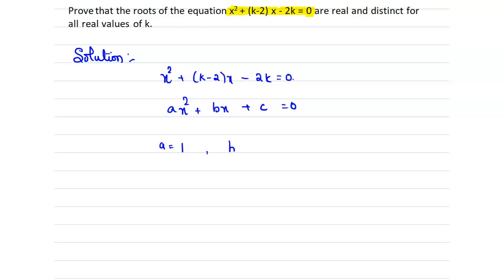Comparing the coefficients of x we get b = k - 2, and comparing the constant term we get c = -2k.